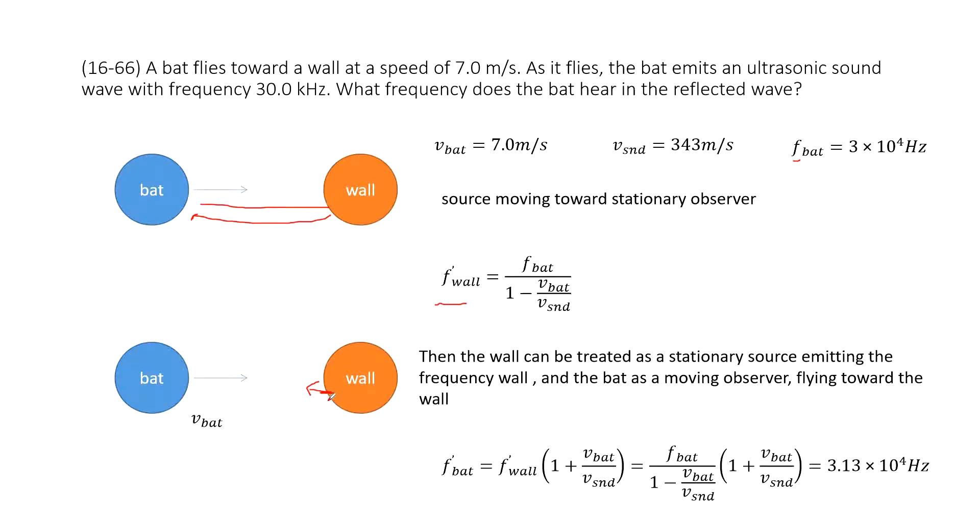So, this is the moving observer towards the stationary source. And we have the function for this one. And this is the frequency generated by the source, the wall.